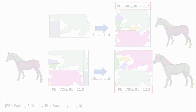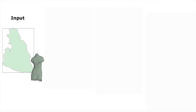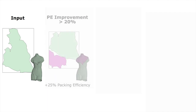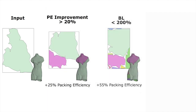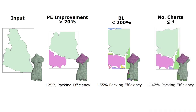Similar to the global case, we repeat this cut and repack optimization process until we reach a target packing efficiency, a user bound on boundary elongation, a bound on the number of charts, or a locally optimal solution that cannot be significantly improved within a given number of iterations.